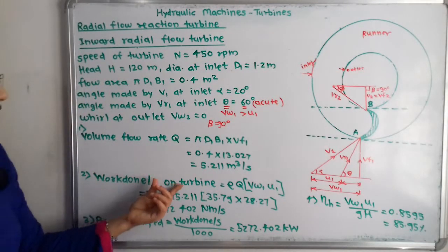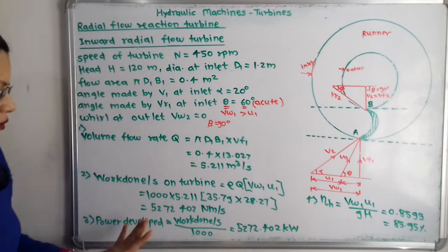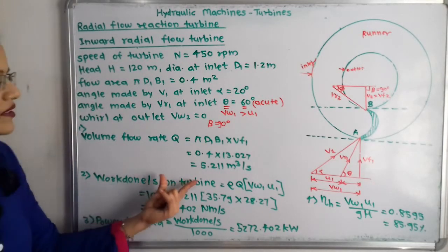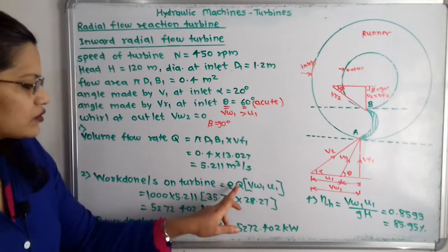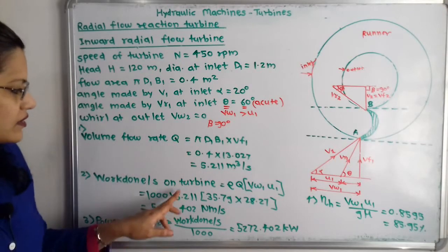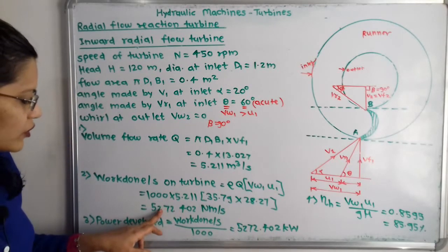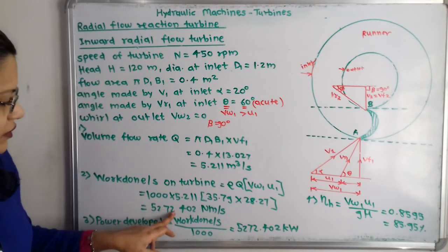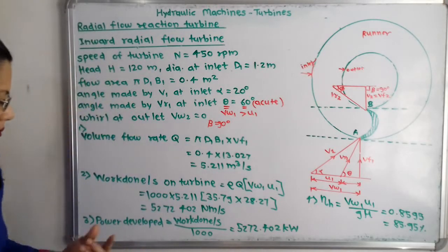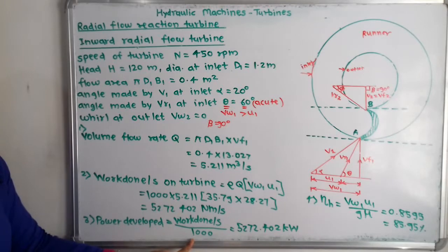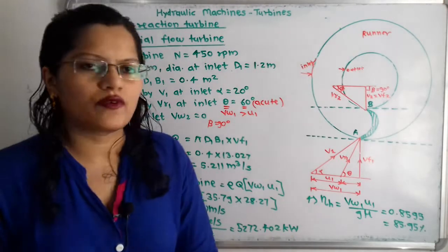For power developed, we first find work done per second using the formula: ρ × Q × Vw1 × u1. Substituting ρ = 1000 kg/m³, Q = 5.211 m³/s, Vw1 = 35.79 m/s, u1 = 28.27 m/s, we get work done = 5,272,402 N·m/s. Dividing by 1000, power developed = 5272.402 kW.